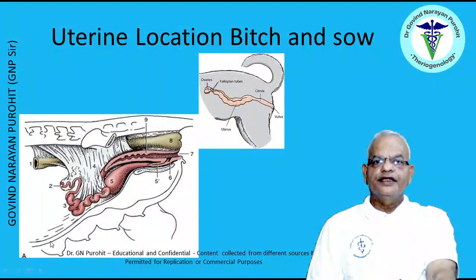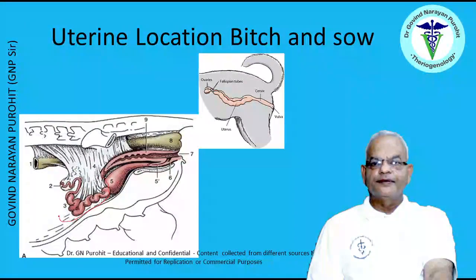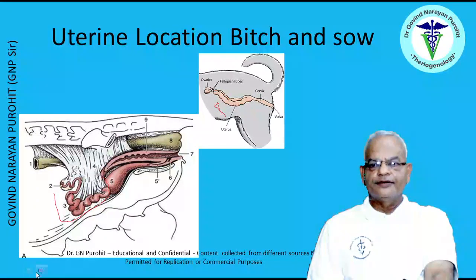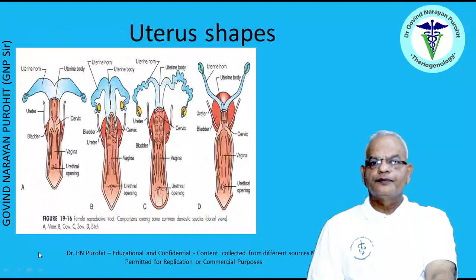The location of the uterine horns in the bitch and sow is completely abdominal. The uterine horns are abdominally located in both the sow and bitch — they are long tubular structures located in the abdominal cavity in these two species and also in the cat.